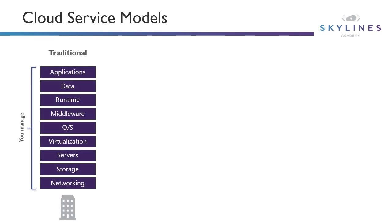If we start with the traditional model from the bottom, we have networking, storage, servers, and virtualization — you used to manage all of those in your data center. On top of that, you'd manage an operating system, middleware, runtime, data, and applications. That is the traditional model and led to a very siloed approach across each one of those layers in many cases.